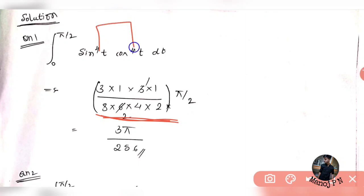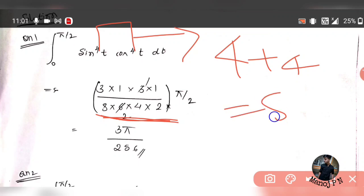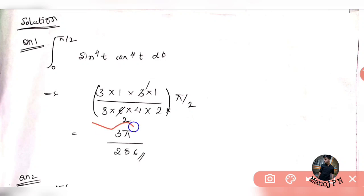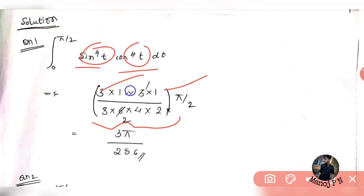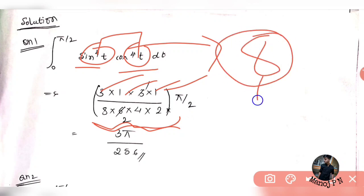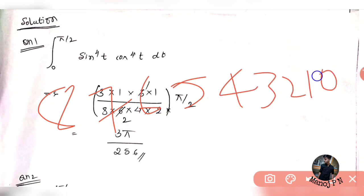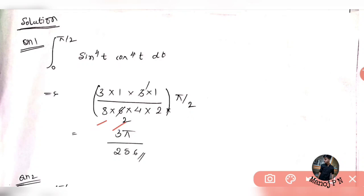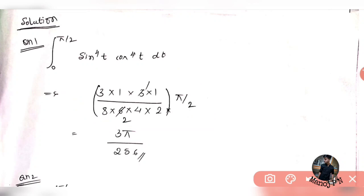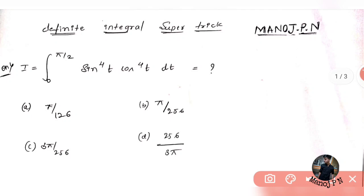How do I write it? I will add these two powers first — 4 plus 4 is going to give me 8. So I will work with 8. The even upcomings of 8 are: 8, 6, 4, 2 — all of these are my even upcomings, including 8, because 8 is also an even number. So finally: numerator is 3 into 1 into 3 into 1, denominator is 8 into 6 into 4 into 2, and then simplify — I am going to get 3 pi divided by 256. Therefore, my option is going to be 3 pi divided by 256.